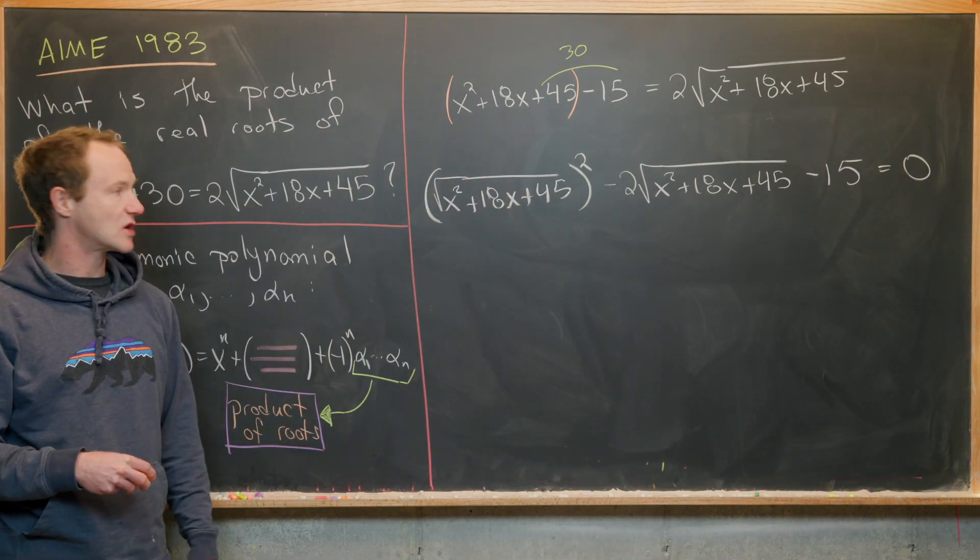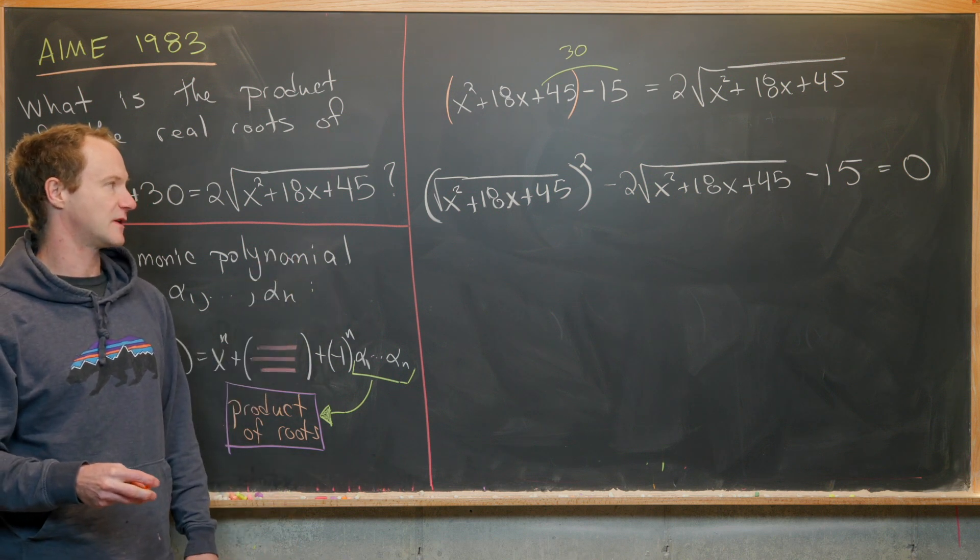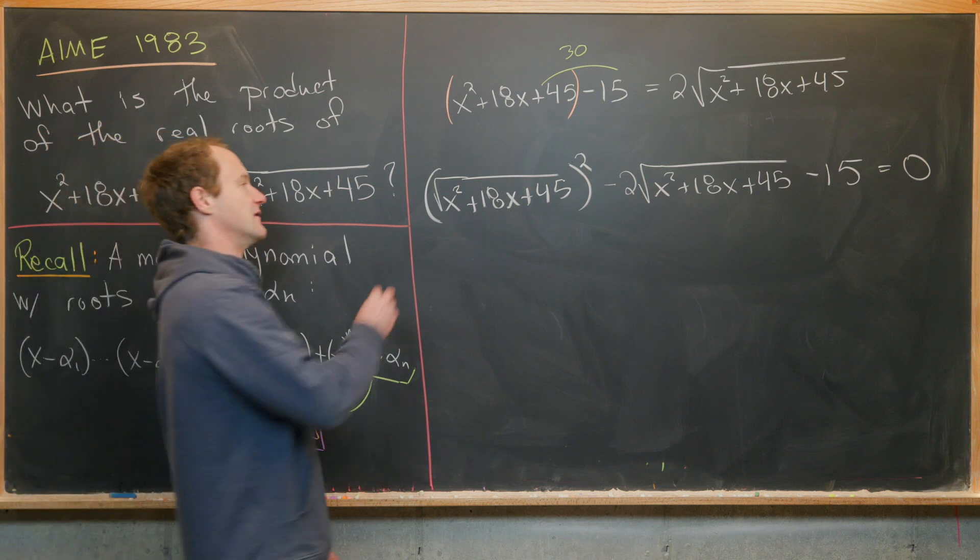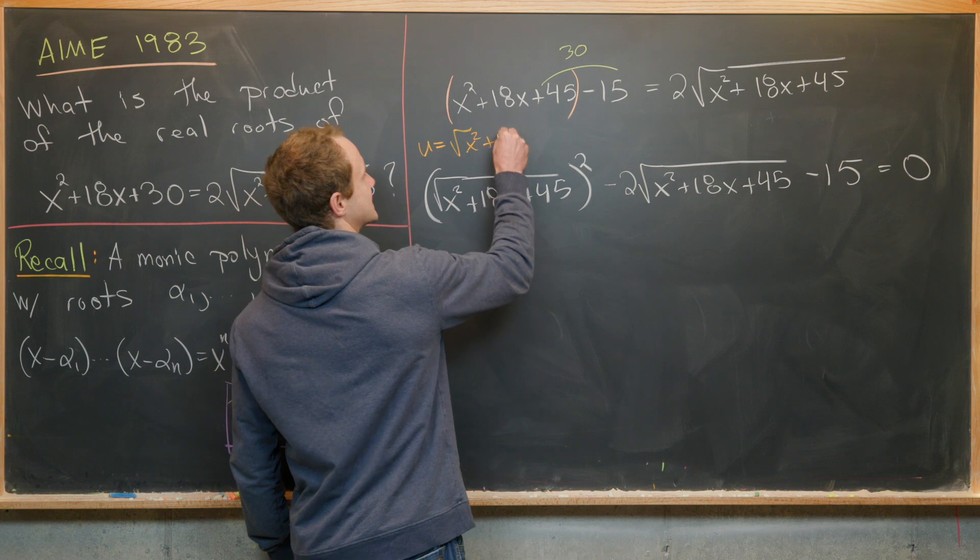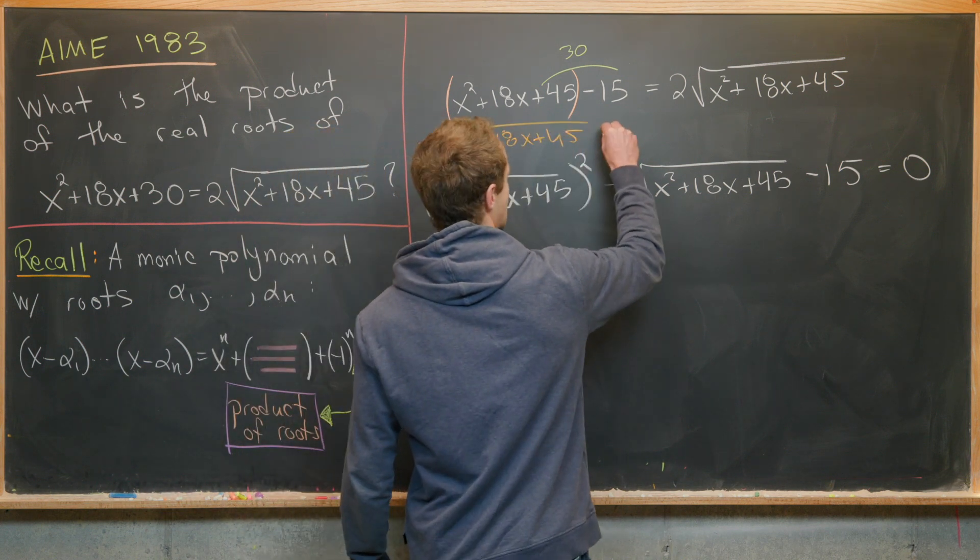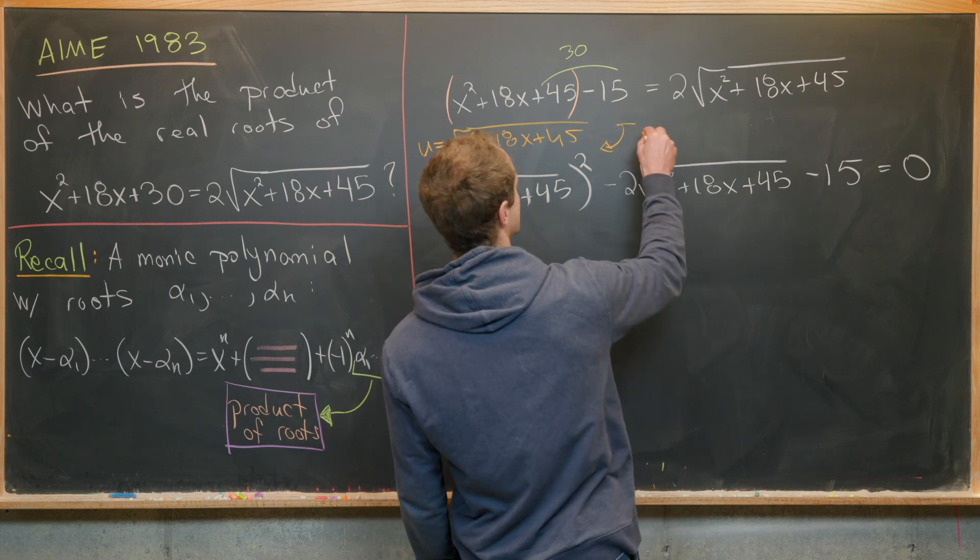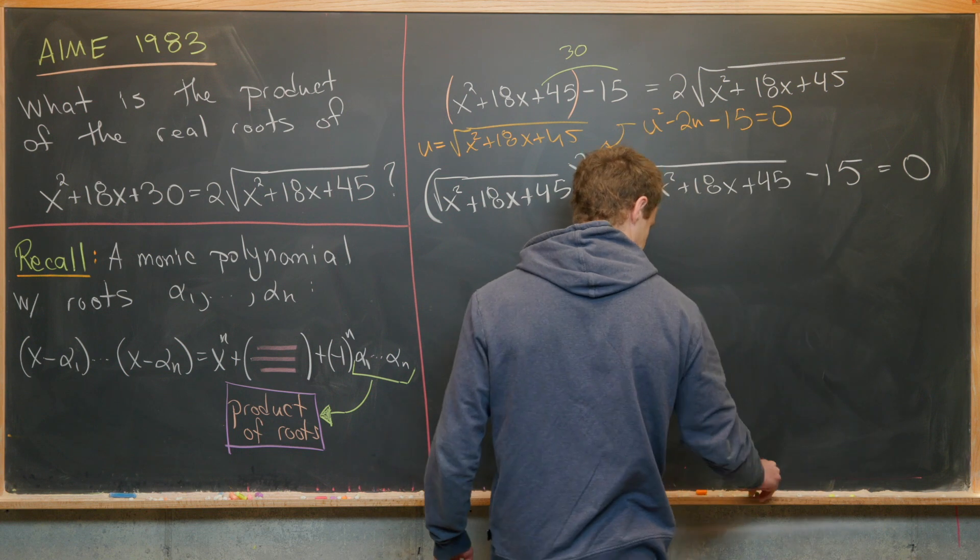Notice that looks like a quadratic polynomial where the variable is √(x² + 18x + 45). In fact, we could let u = √(x² + 18x + 45), and notice that this polynomial is really u² - 2u - 15 = 0.